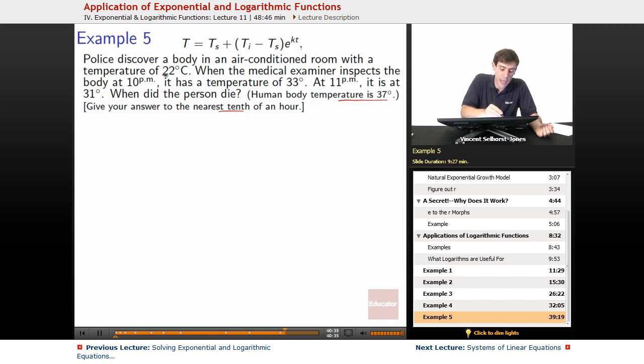So let's get our pieces of data from this. We're told that the room has a temperature of 22 degrees. So the surrounding temperature T_s of our room is 22. The initial temperature of our body is 37 degrees, right? Human bodies are 37 degrees when they're alive. When the medical examiner inspects the body at 10 p.m., it has a temperature of 33 degrees. So now we've got this confusing thing of time, right?